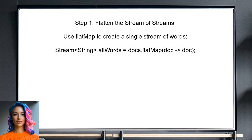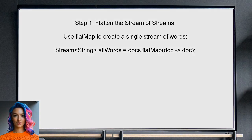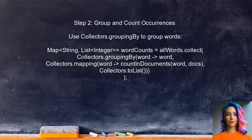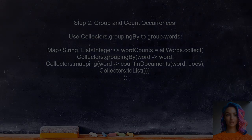To begin solving this problem, the user should first flatten the stream of streams into a single stream of words. This can be achieved using the flatMap method. Next, the user needs to create a map that counts the occurrences of each word in each document. This can be done by grouping the words and counting their occurrences.